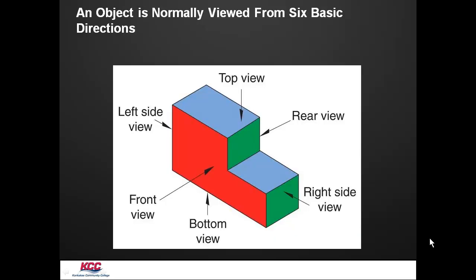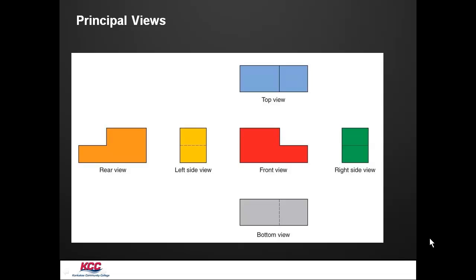We normally get six different views from six different directions, and here are our six principal views. Here's the front in red, the top up here in blue, the right side is green, bottom down here in gray, left, and the rear.